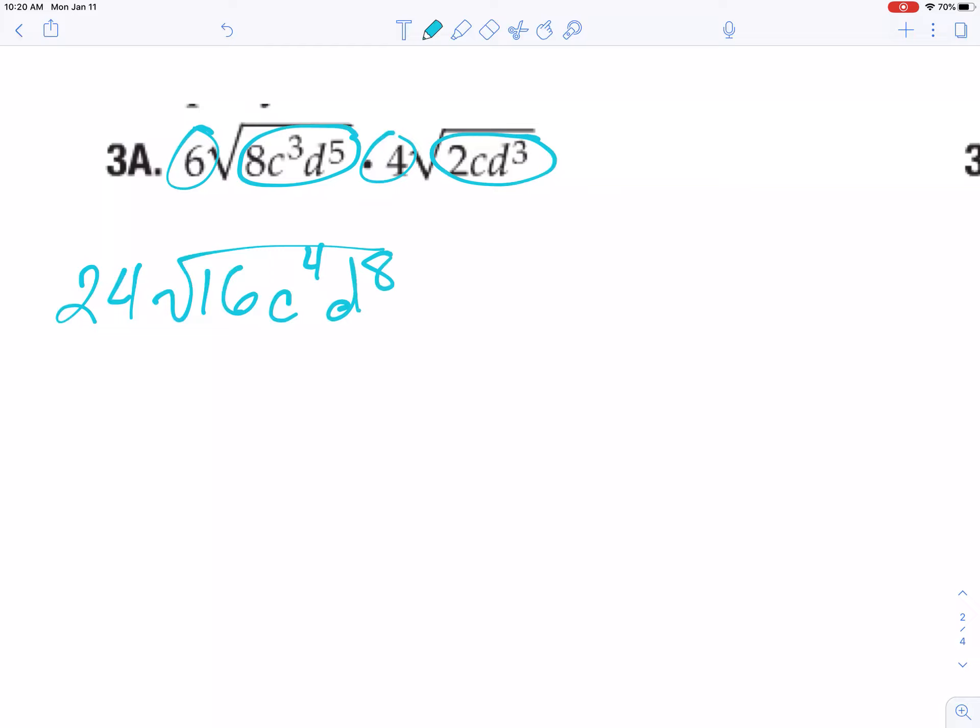Because I chose to do it this way, all of these radicals are going to simplify pretty nicely. The square root of 16 is 4. The square root of c to the 4th is just c squared. And the square root of d to the 8th is just d to the 4th.